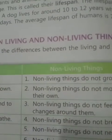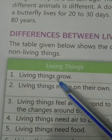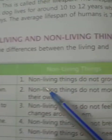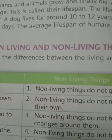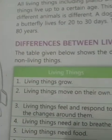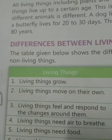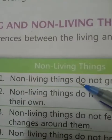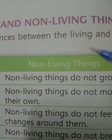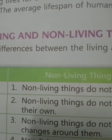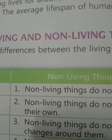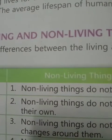First difference — living things grow, while non-living things do not grow. Living things grow for a certain time, after which their growth stops. On the other hand, non-living things do not grow. For example, a human child grows because it is a living thing, while a pencil cannot grow because it is a non-living thing.